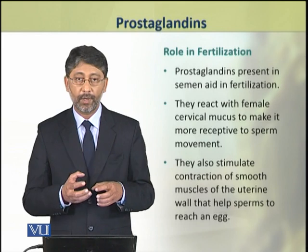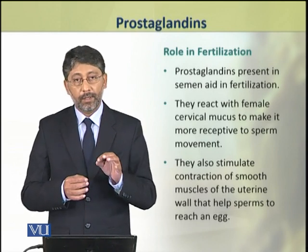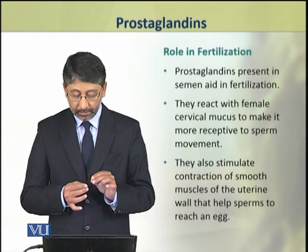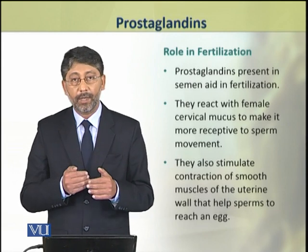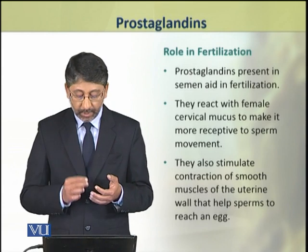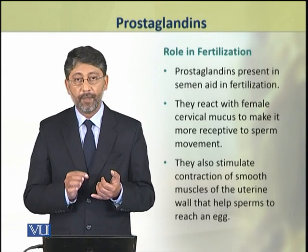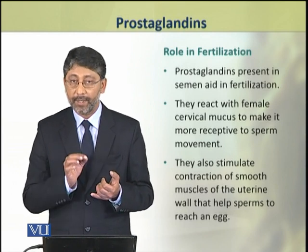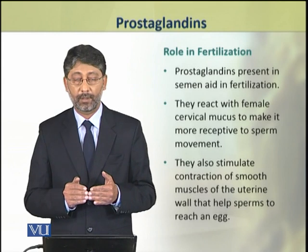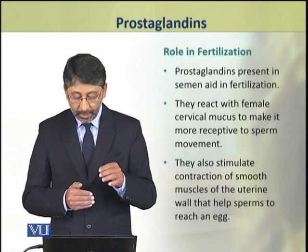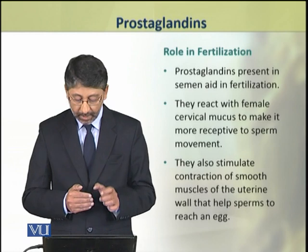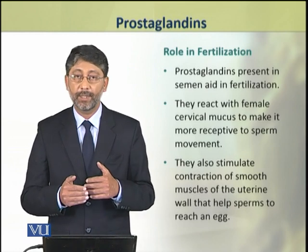First, we shall discuss their role in fertilization. Semen produced by males has certain prostaglandins that aid or help in fertilization. Prostaglandins present in semen play two types of roles: first, they react with the female's cervical mucus and make it more receptive for sperm movement. Second, they produce contractions in the smooth muscles of the uterine wall, which help the sperms reach the egg.